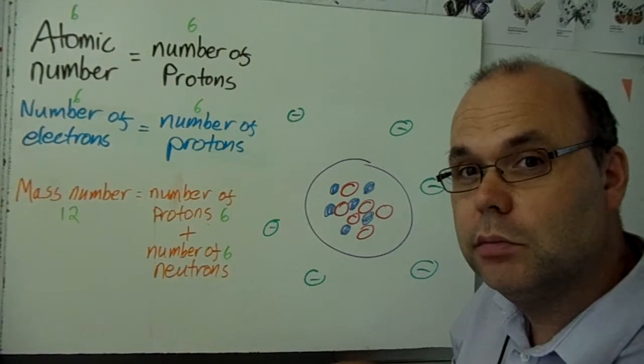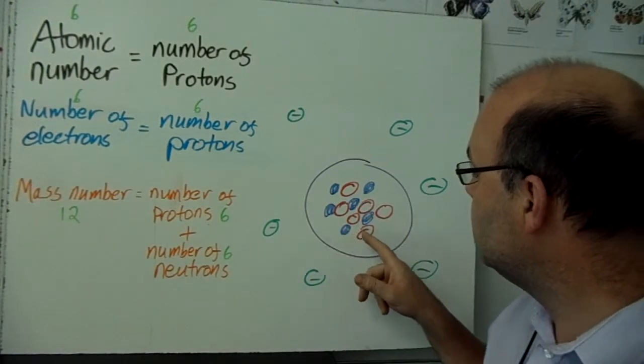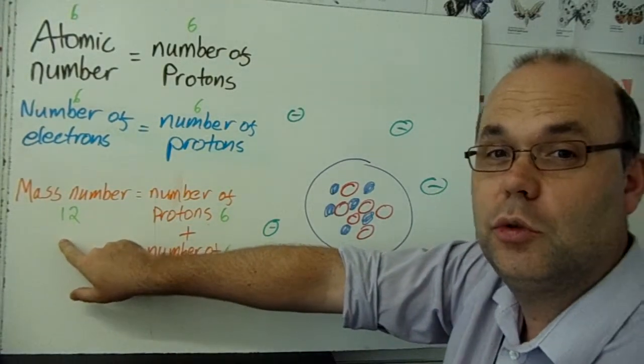And they're about the same size. So if you say we've got six protons and six neutrons, you add up the six and the six, you get the mass. The mass is 12.